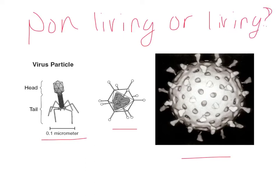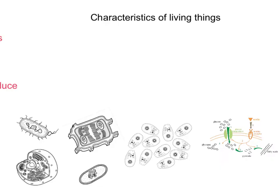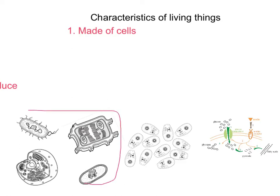So let's take a look at some characteristics of living things to try to help make that determination. There are five basic characteristics of living things that we are going to focus on. The first one is that all living things are going to be made up of cells. Down here we've got some samples of cells — I've got a plant cell here on the side, this one over here is an animal cell, and then the other two are both prokaryotic cells, or bacterial cells.